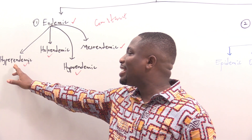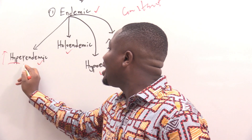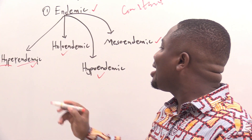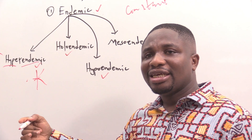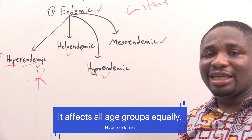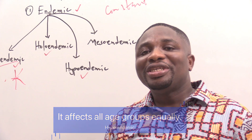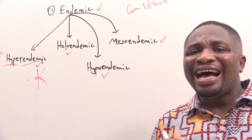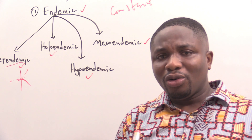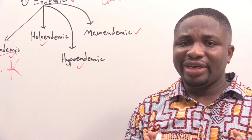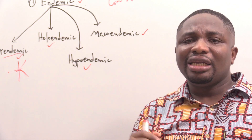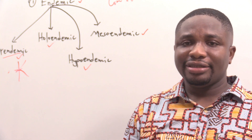When we say a condition is hyperendemic — hyper meaning high — it refers to the constant presence of a disease at high incidence and/or prevalence rates, and as such affects all age groups equally. Hyperendemic refers to the persistent high number of cases of a disease in a particular geographical area.